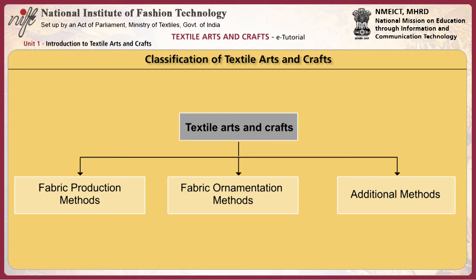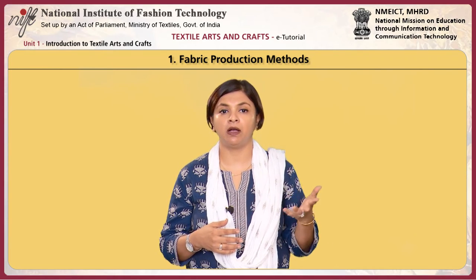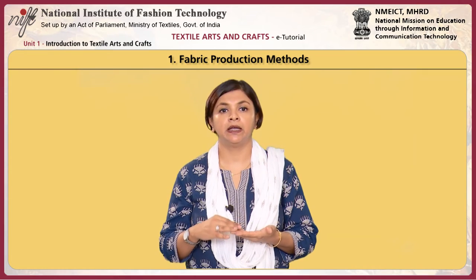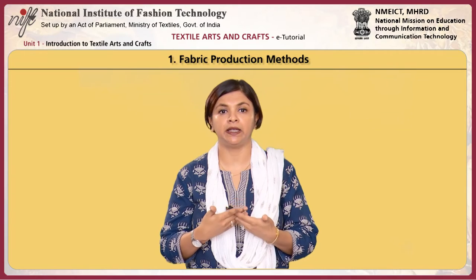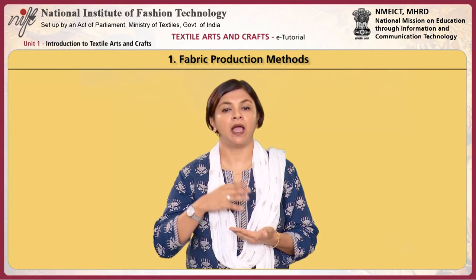These categories encompass handcrafted techniques such as fabric production methods, fabric ornamentation methods and additional methods. The term fabrics is used here to comprise all the products of textile techniques that consist of the basic elements such as threads or groups of threads which have been interworked by manual or mechanical means to obtain the necessary coherence. The fabric production methods comprise various techniques of textile arts and crafts employed for creating the basic fabric structure, applied as different forms of interworking and interlacing during production.